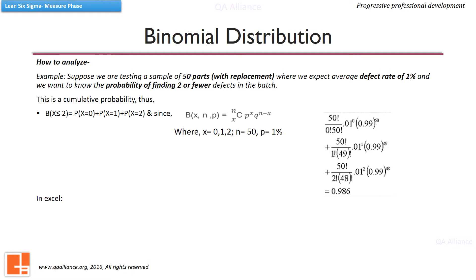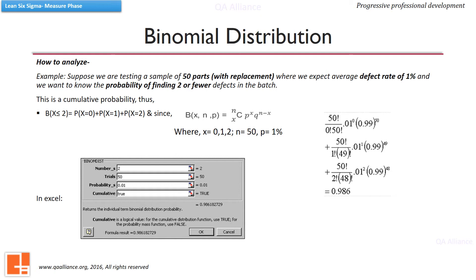The same can be calculated in Excel using the BINOMDIST function. In the dialog box, we fill in the inputs: number of successes is 2, number of trials is 50, probability is the expected average defect rate of 1%, and cumulative is set to TRUE. This also gives the same answer of 0.986. We can say that the probability of finding two or less defects in the batch is 0.986, assuming the expected average defect rate is 1%. As an exercise, use the BINOMDIST function to find the probability of getting one or less defects, getting zero defects, etc.